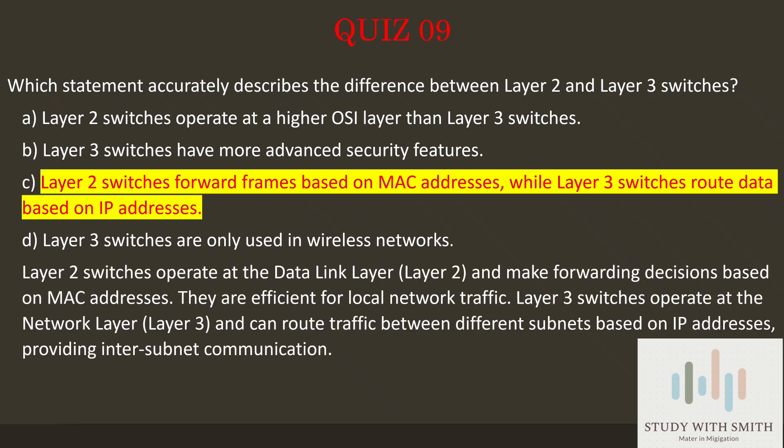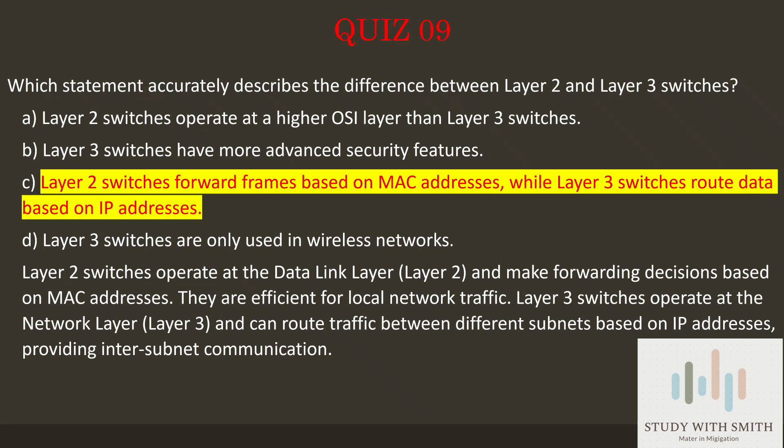The answer is C — Layer 2 switches forward frames based on MAC addresses, while Layer 3 switches route data based on IP addresses. Layer 2 switches operate at the data link layer, Layer 2, and make forwarding decisions based on MAC addresses; they are efficient for local network traffic. Layer 3 switches operate at the network layer, Layer 3, and can route traffic between different subnets based on IP addresses, providing inter-subnet communication.